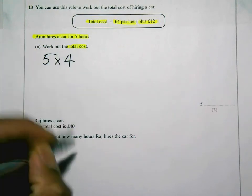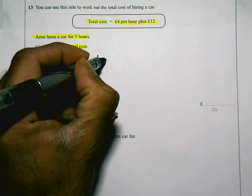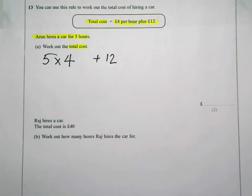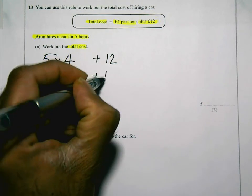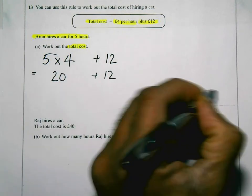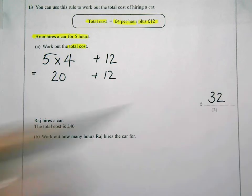Five times four is twenty. Twenty plus twelve is thirty-two. So it's thirty-two pounds altogether. All right, so pretty straightforward there.